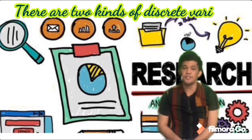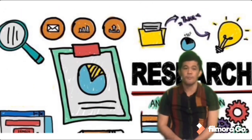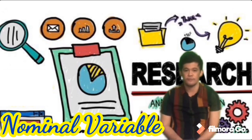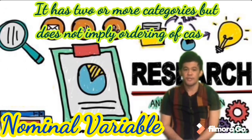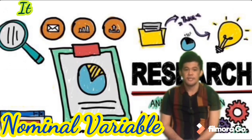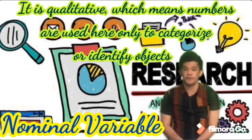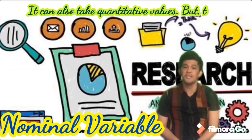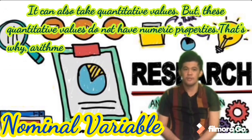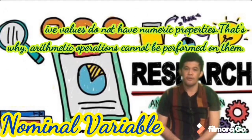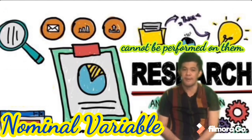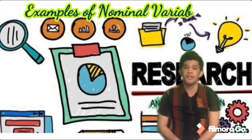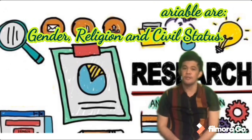There are two kinds of discrete variable: nominal variable and ordinal variable. The first kind of discrete variable is nominal variable. It is a variable with no quantitative value. It has two or more categories but does not imply ordering of cases. It is qualitative, which means numbers are used here only to categorize or identify objects. These values do not have numeric properties, so arithmetic operations cannot be performed on them. Examples of nominal variable are gender, religion, and civil status.